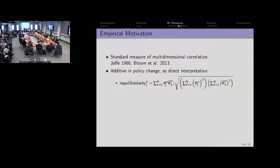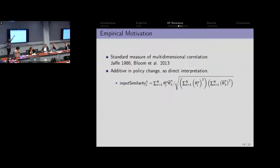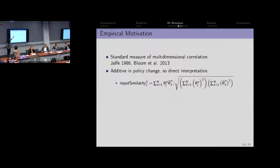Here's the empirical motivation for why we're using this particular measure. It's a standard measure of multidimensional correlation used extensively in the technology and patent literature — Jaffe constructs a similar measure asking if a firm or production unit is similar in technology to another industry. Bloom, Van Reenen, and Schankerman have recently used it as well, arguing that this well-normalized measure has much lower bias when going from, say, three-digit to four-digit or two-digit aggregation. What is going to be really useful for us is that it's additive in policy change, which will give us a difference-in-differences type strategy.